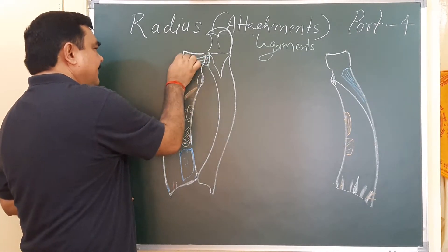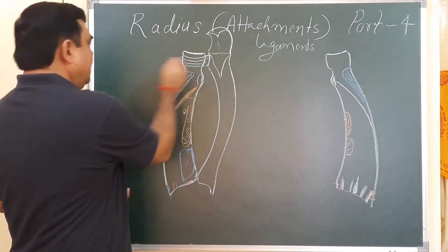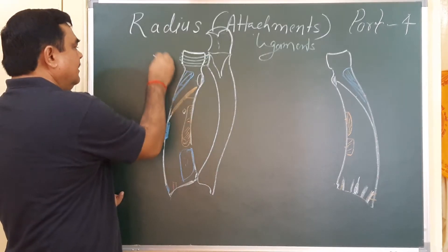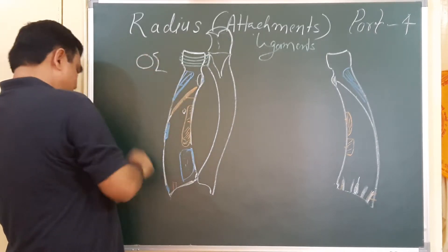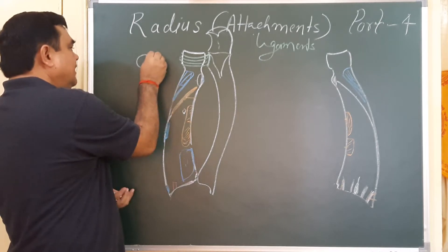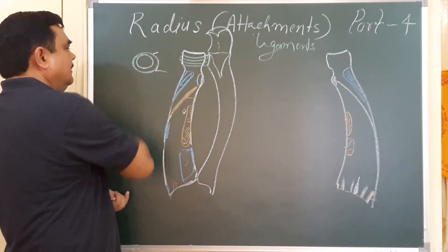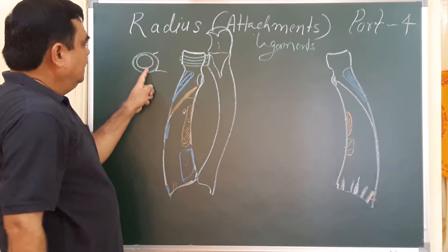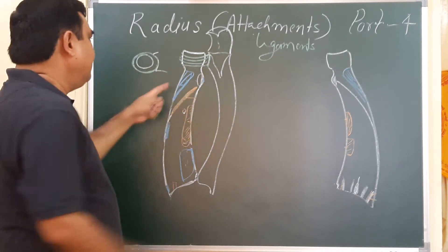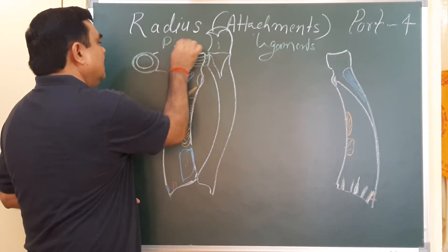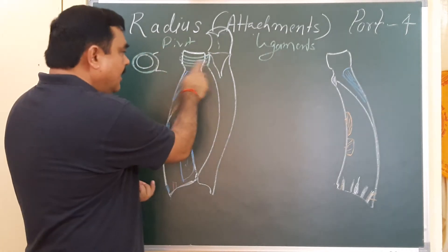It encircles the head. If you take a section here, you will find the head is like this, and this annular ligament encircles like this. Here, a pivot joint is formed — this is the superior radioulnar joint.